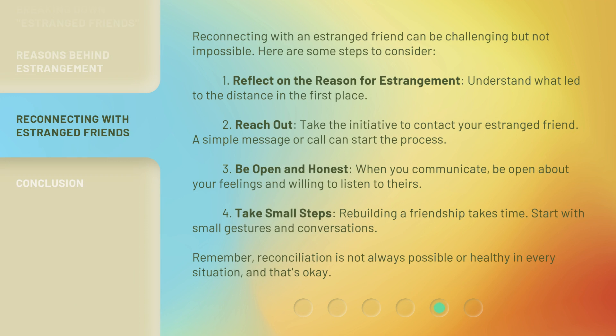Understanding these reasons can help us empathize with those who have experienced this kind of loss in their social circles. Reconnecting with an estranged friend can be challenging but not impossible. Here are some steps to consider: 1. Reflect on the reason for estrangement — understand what led to the distance in the first place. 2. Reach out — take the initiative to contact your estranged friend; a simple message or call can start the process. 3. Be open and honest — when you communicate, be open about your feelings and willing to listen to theirs. 4. Take small steps — rebuilding a friendship takes time; start with small gestures and conversations. Remember, reconciliation is not always possible or healthy in every situation, and that's okay.